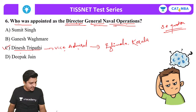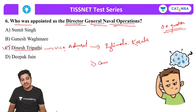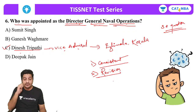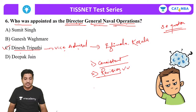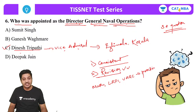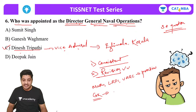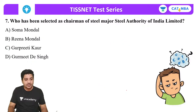A student asked how to remember so many names. There are only two keys: first, read consistently — keep reading again and again. Second, revision. Out of sight is out of mind — always remember that. Just like you practice daily for Quantitative Aptitude, LRDI, and VARC, the GK section is no different. You need to revise the GK section regularly.